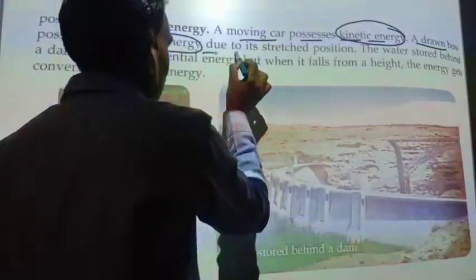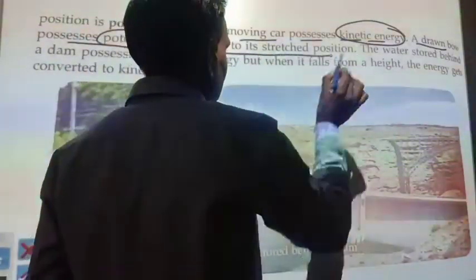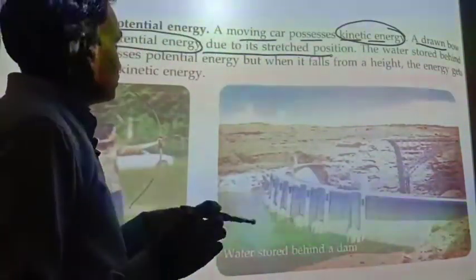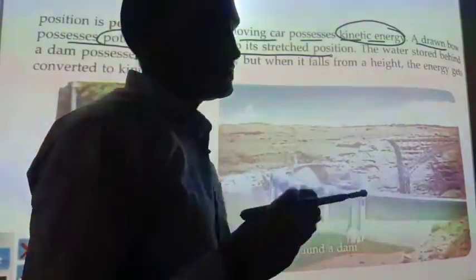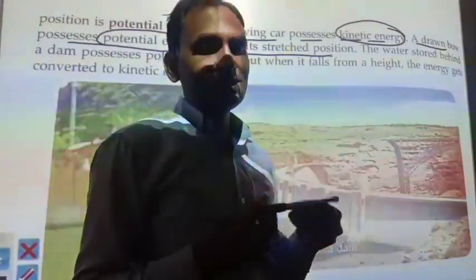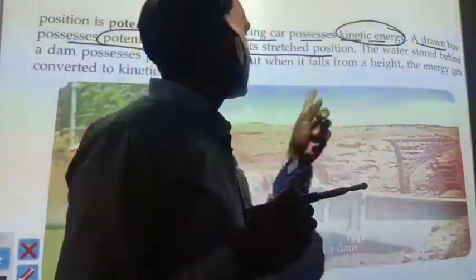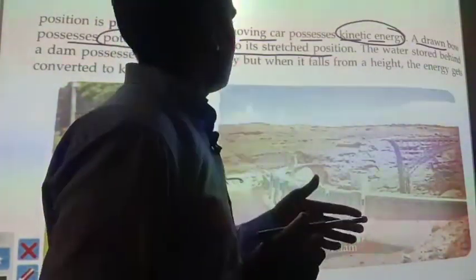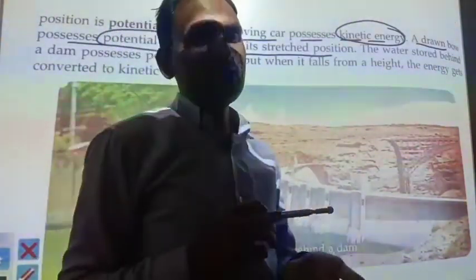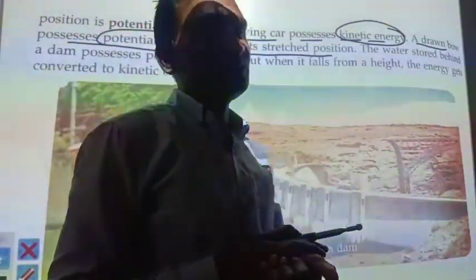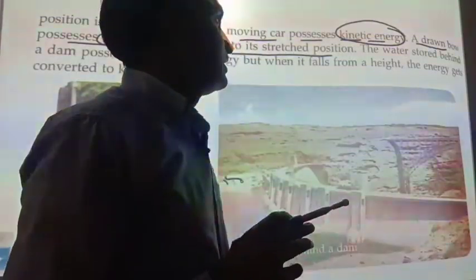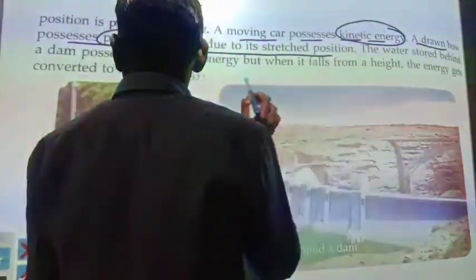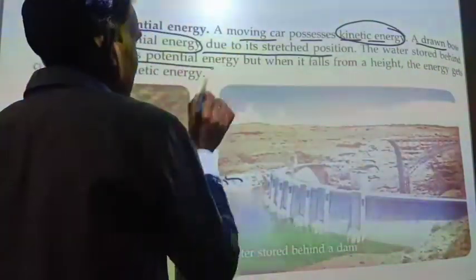So what is potential energy? It has changed the position. Potential energy is the energy related to position. The water stored behind a dam is an example of potential energy.